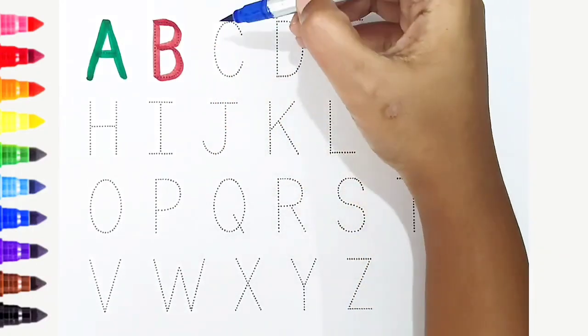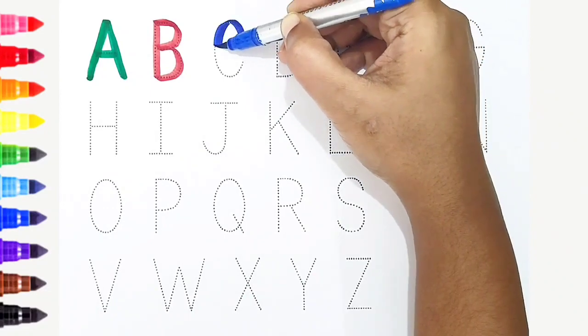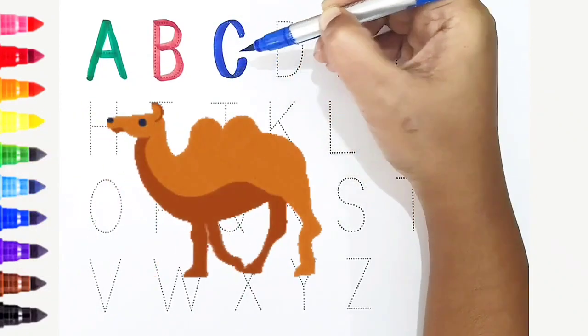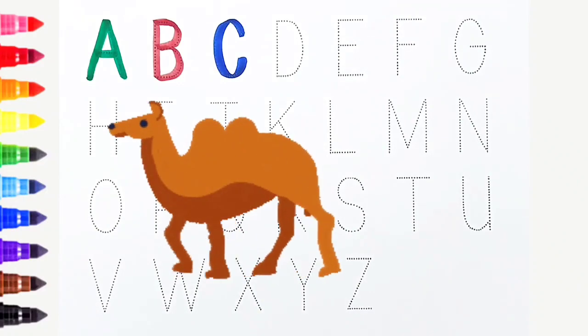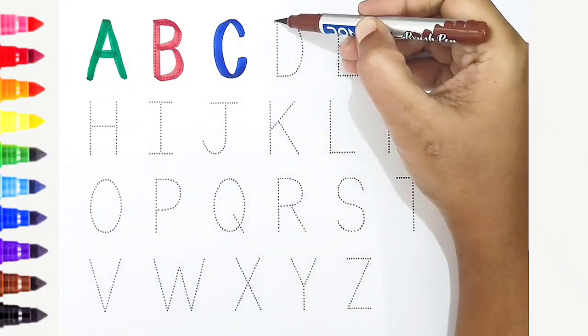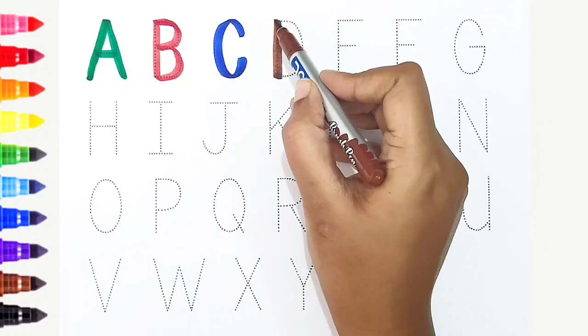C, dark blue color. C is for camel. D, brown color. D is for donkey.